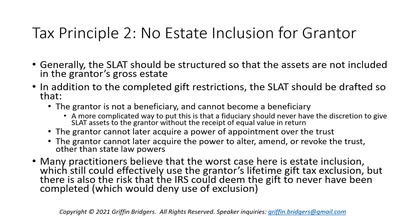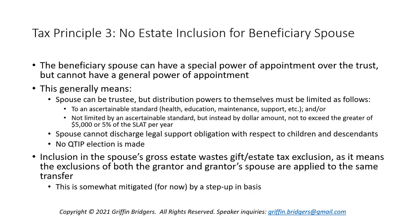A bare power in the trust instrument itself to alter, amend, or revoke — whether now or in the future — would cause an issue. It may be easy to believe that the worst case here is simply estate inclusion, which would pull post-gift appreciation back into the grantor's gross estate. And there are anti-clawback regulations which would allow a grantor to use lifetime gift tax exclusion and not be penalized if that exclusion amount goes down prior to death. But by having estate inclusion, there is the risk that the IRS could deem this abusive or deem the gift to never have been completed, which would deny the grantor's use of exclusion — a really bad outcome.